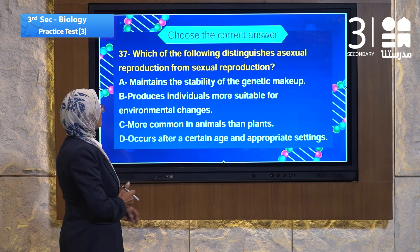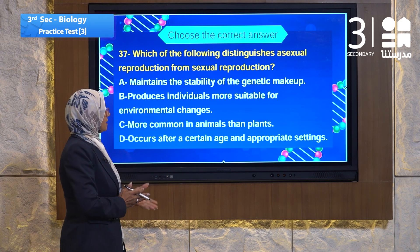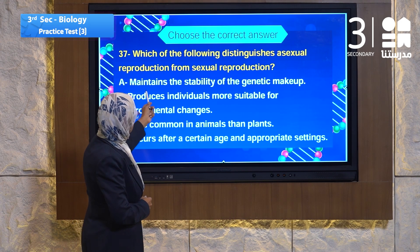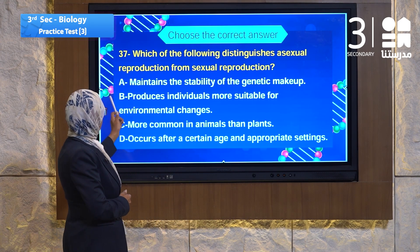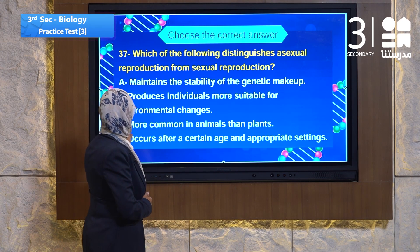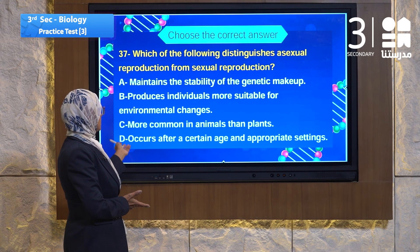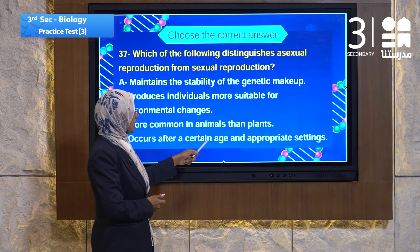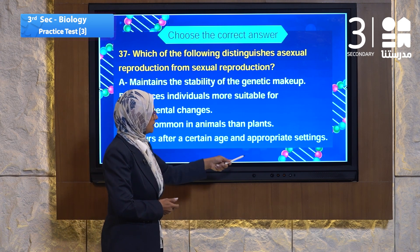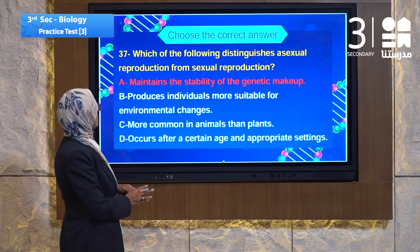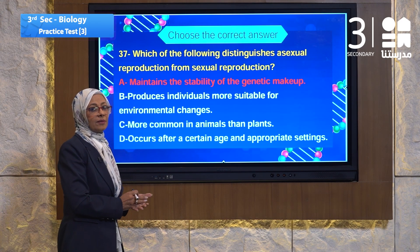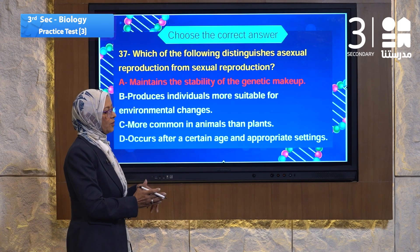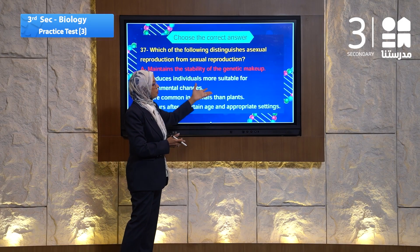Let's compare and distinguish between them. The choices are: A, maintains the stability of the genetic makeup; B, produces individuals more suitable for environmental change; C, more common in animals than plants; D, occurrence after a certain age and specific setting. The answer must be number A — maintains the stability of the genetic makeup. That is what distinguishes asexual from sexual reproduction.